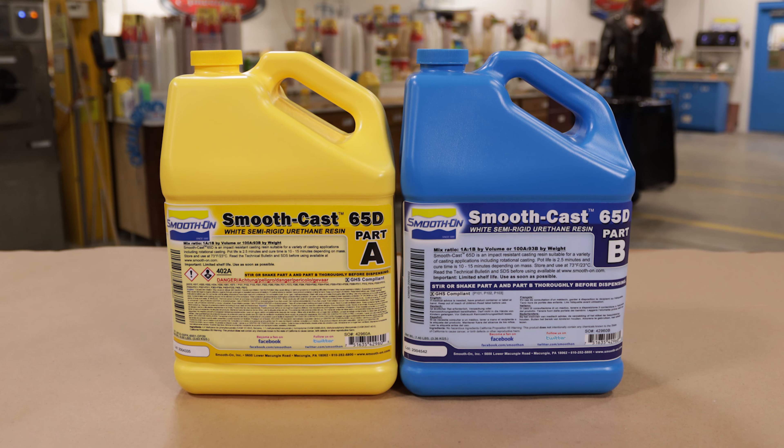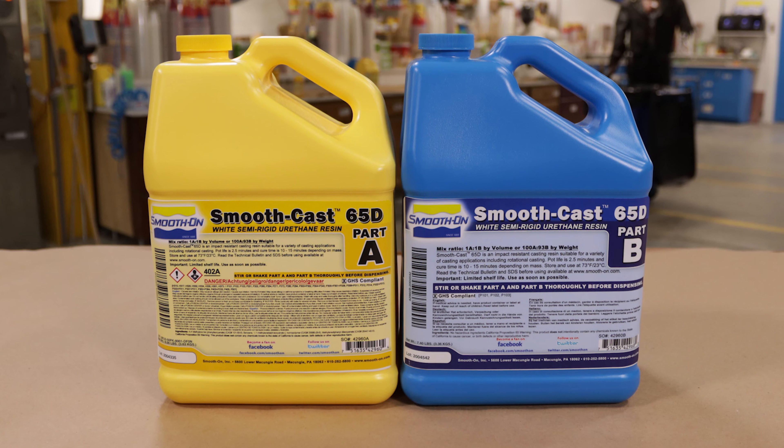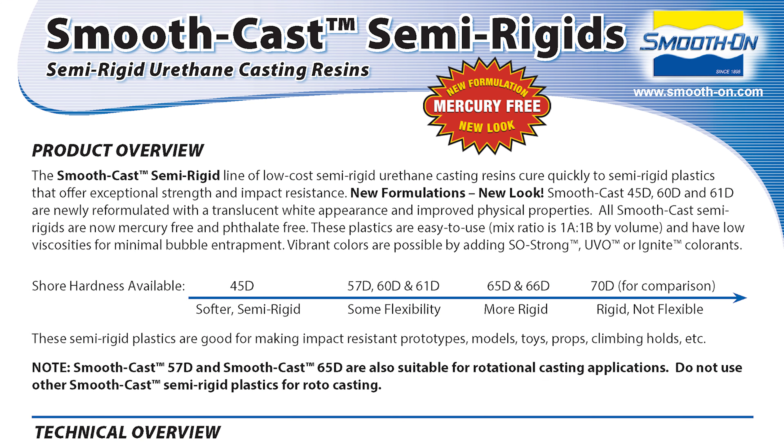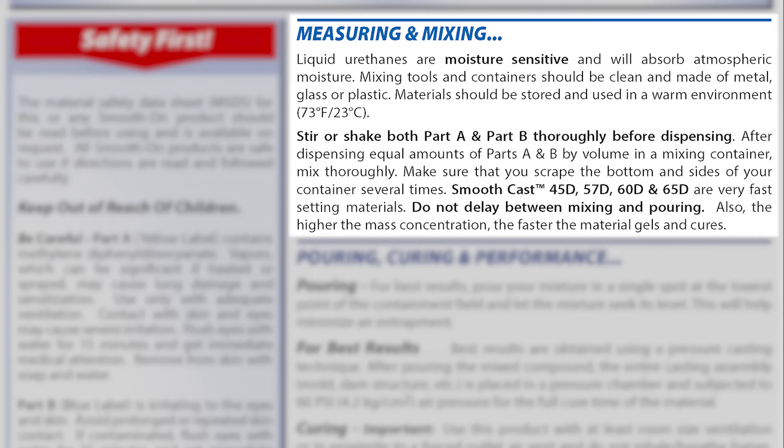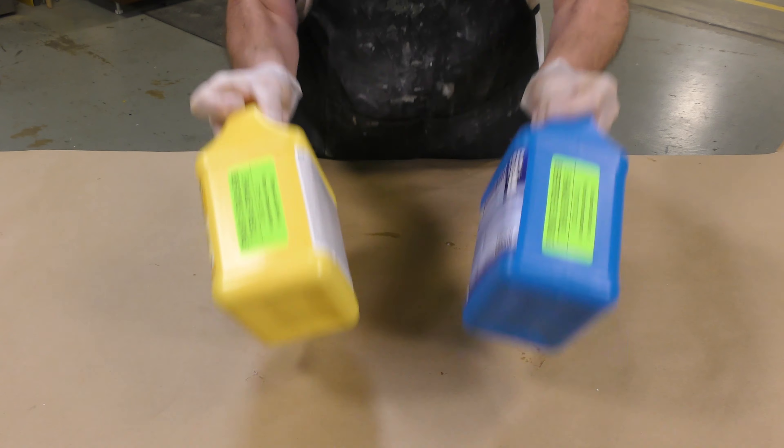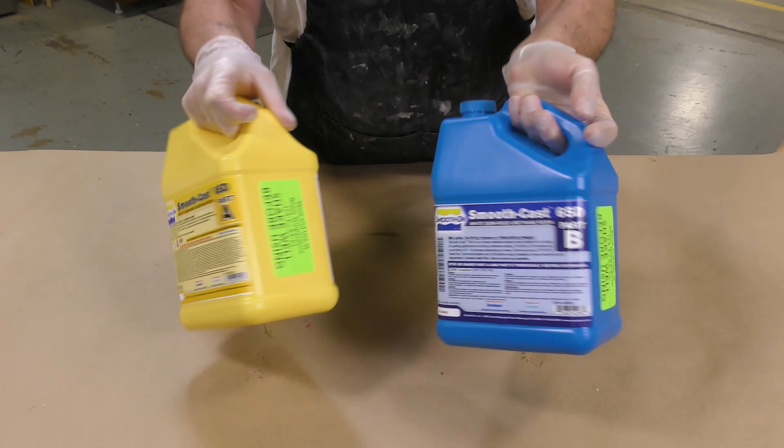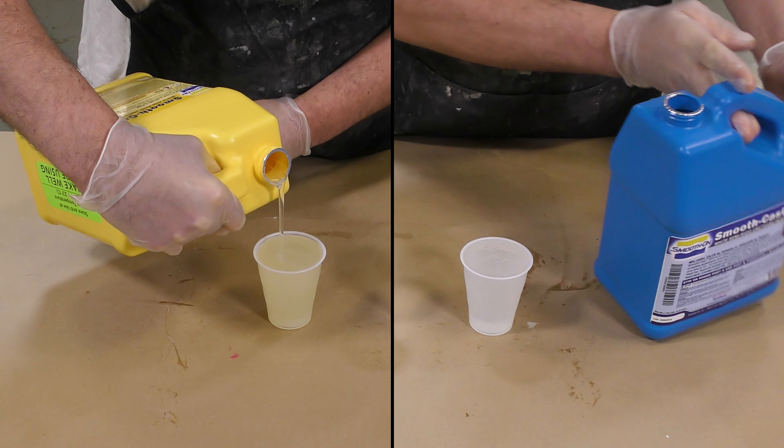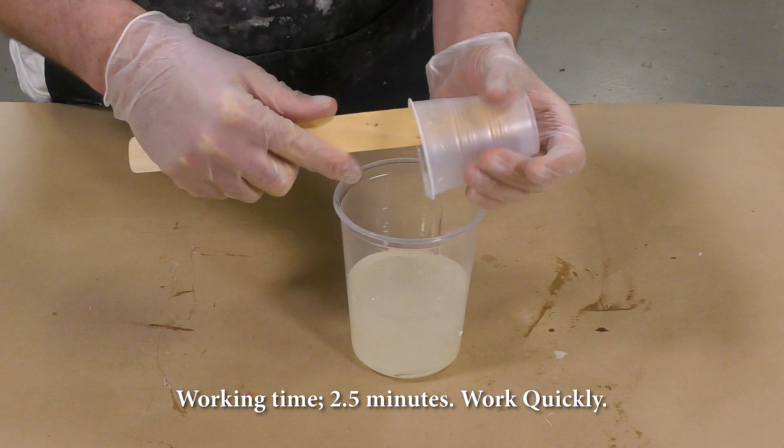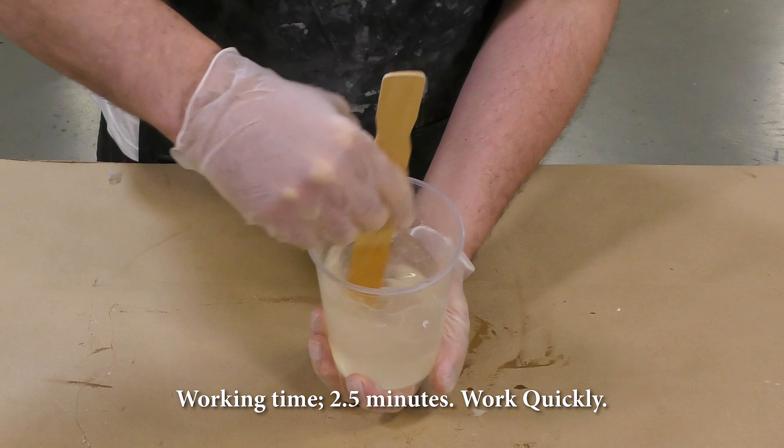For our casting resin, we're using the SmoothCast 65D. This is a semi-rigid casting resin. It is a one-to-one mix ratio by volume, so no gram scale is necessary, but keep in mind it has even a shorter working time of two and a half minutes with a cure of about 10 to 15 minutes. As always, you want to follow the mixing instructions of the materials. And as you can see on the side labels here, it says shake well before using. So we're going to pre-mix the A and B separately before dispensing. You want to dispense your Part B first with urethane plastics because the Part A is sensitive to moisture.